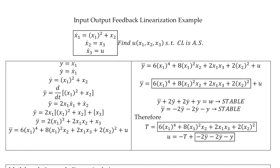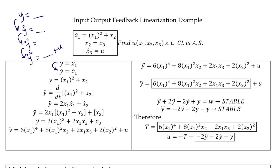In the input-output feedback linearization scheme, what we do is find a virtual output signal y — it can be one of the states, a linear combination of them, or some function of them. The state dimension is three and we differentiate y. We differentiate it three times until we have some input term appearing, and this is in a way a nonlinear problem.